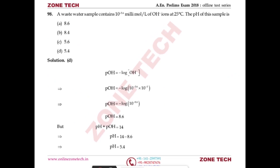Question number 98: a wastewater sample contains 10^(−5.6) mmol/L of OH⁻ ions at 25°C. pH = 14 + log[OH⁻] = 14 − 5.6 = 8.4. Find the pH of the sample using the relation between pOH and pH.